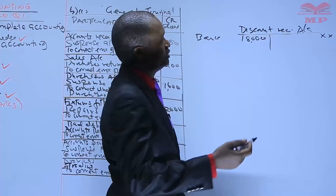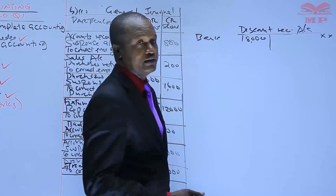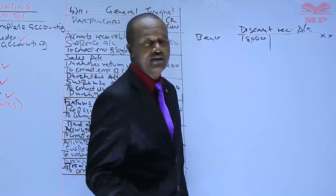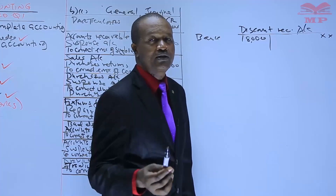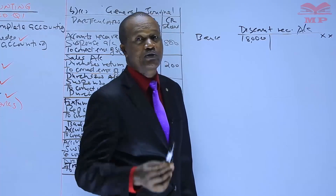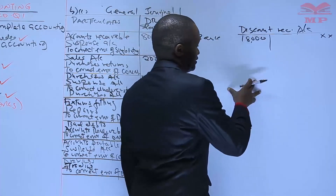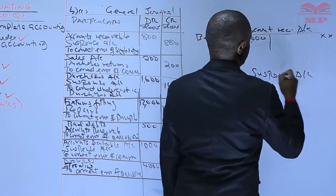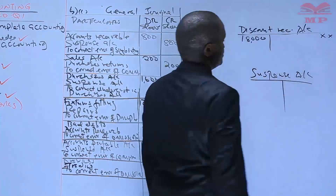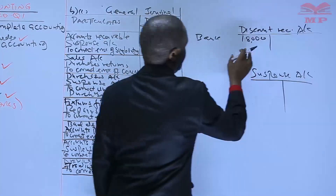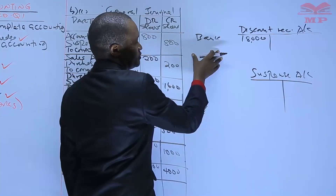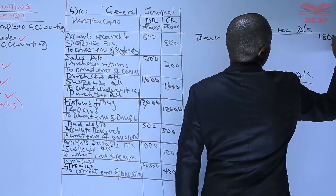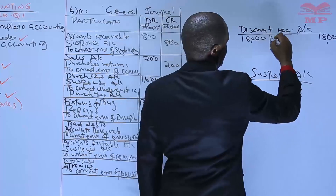So how then do we correct it? I repeat: when an error affects only one account, then the suspense account has to be introduced in correcting the error. So we introduce the suspense account, because there is an error here.